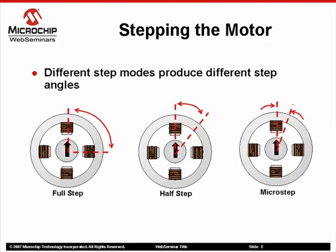As we saw in Part 1, each stepper motor will have a defined step angle associated with it. In the above example, we can see that with two phases, we have a step angle of 90 degrees. If we implement some basic techniques, we can improve the resolution of the motor by decreasing the stepping angle.